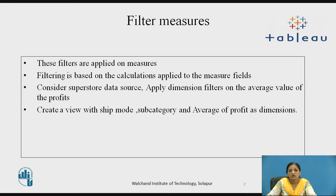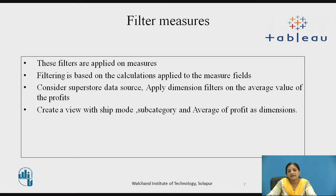Moving on to filter measures. These filters are applied on measures; filtering is based on the calculations applied to the measure fields. For example, consider the same data source, superstore.xls. Apply the dimension filters on the average value of the profits — here the measure is the average value of profit. Create a view with ship mode, subcategory, and average of profit as dimensions.